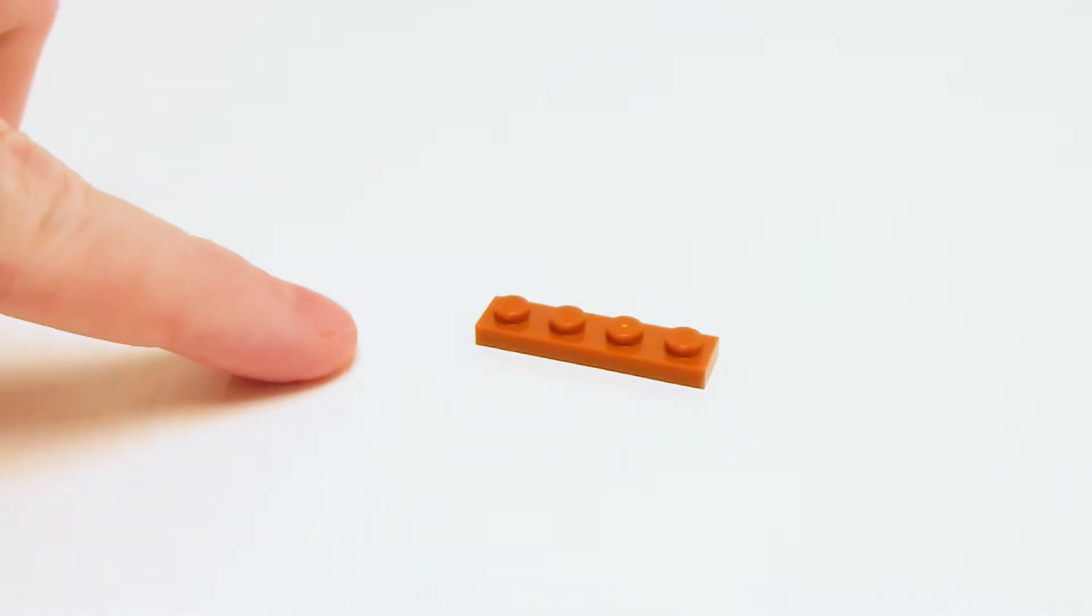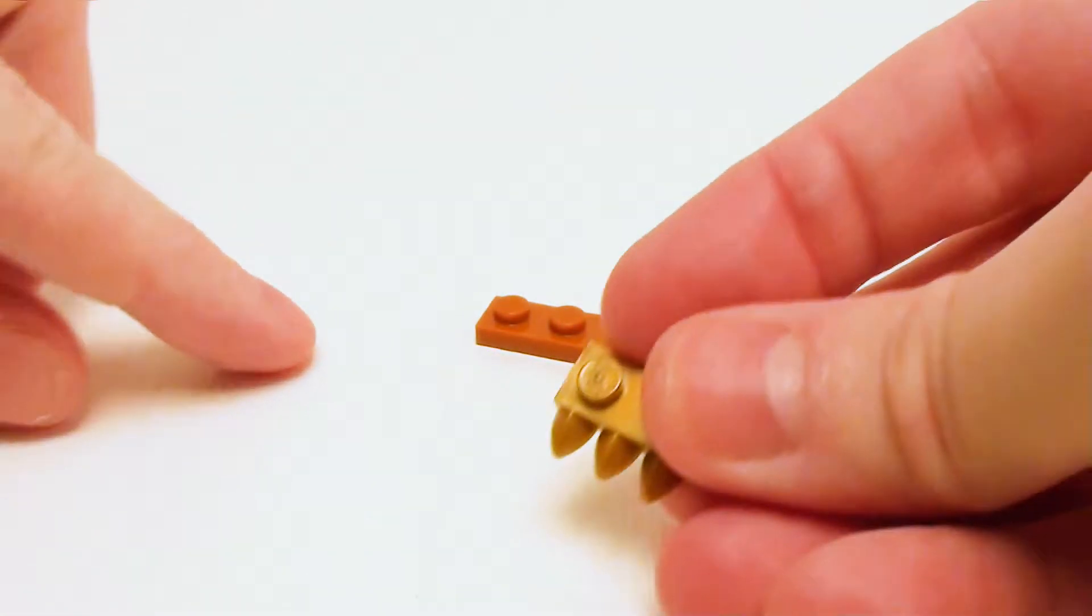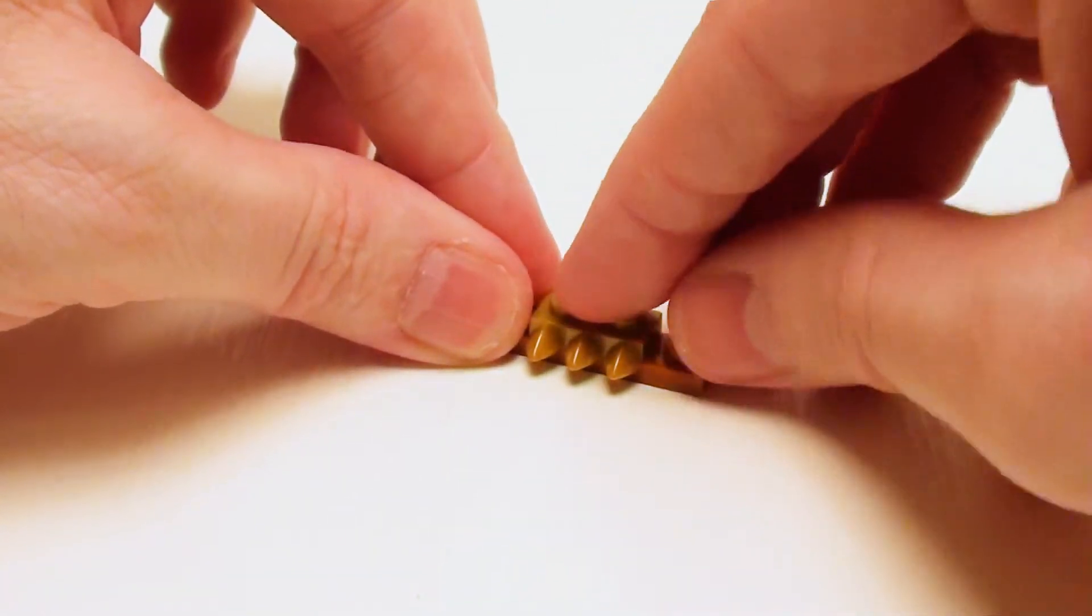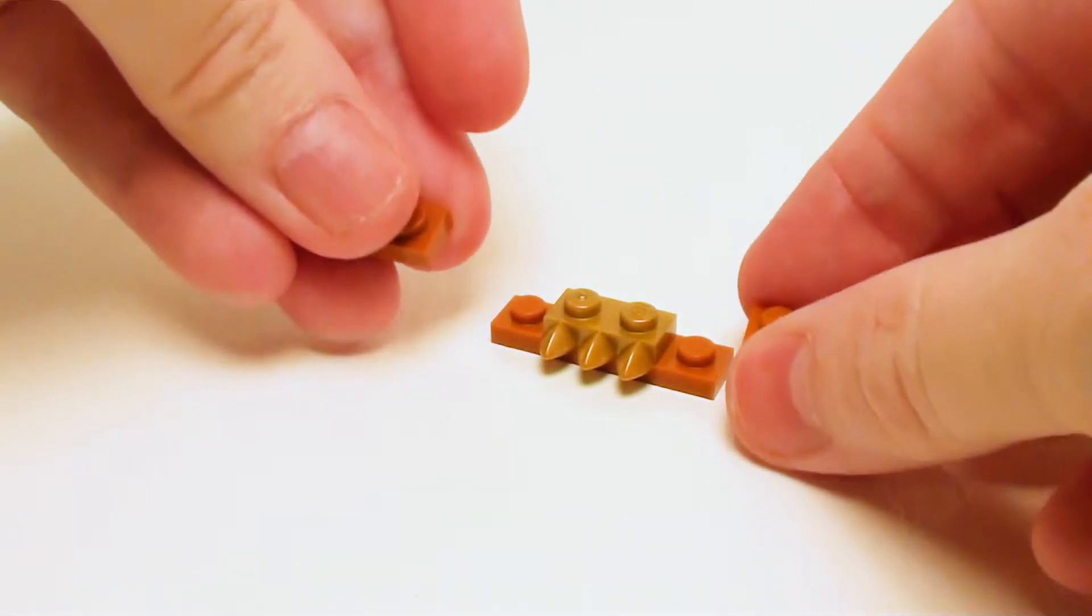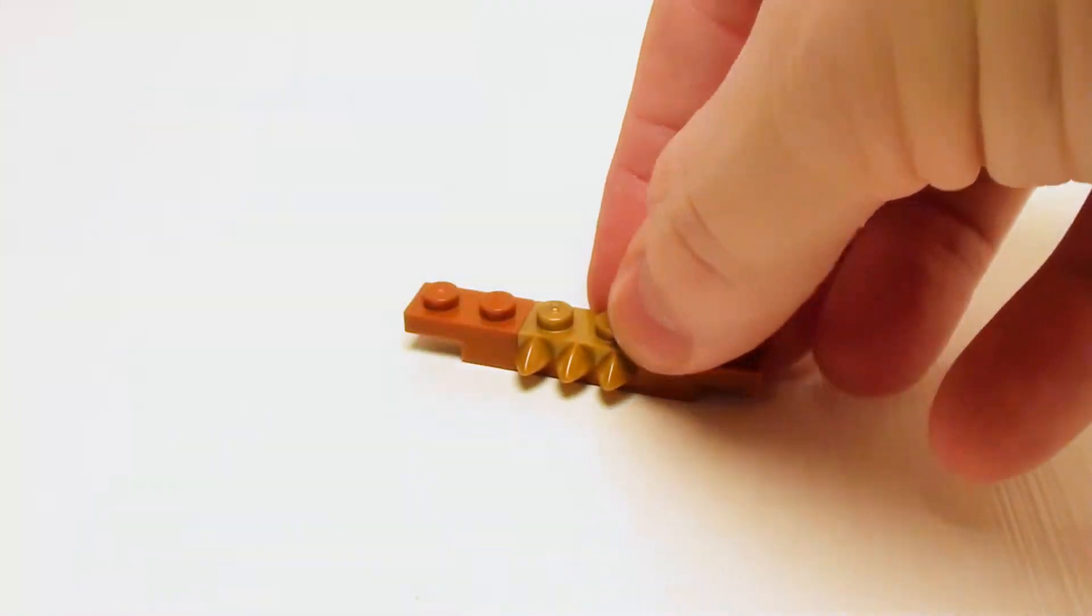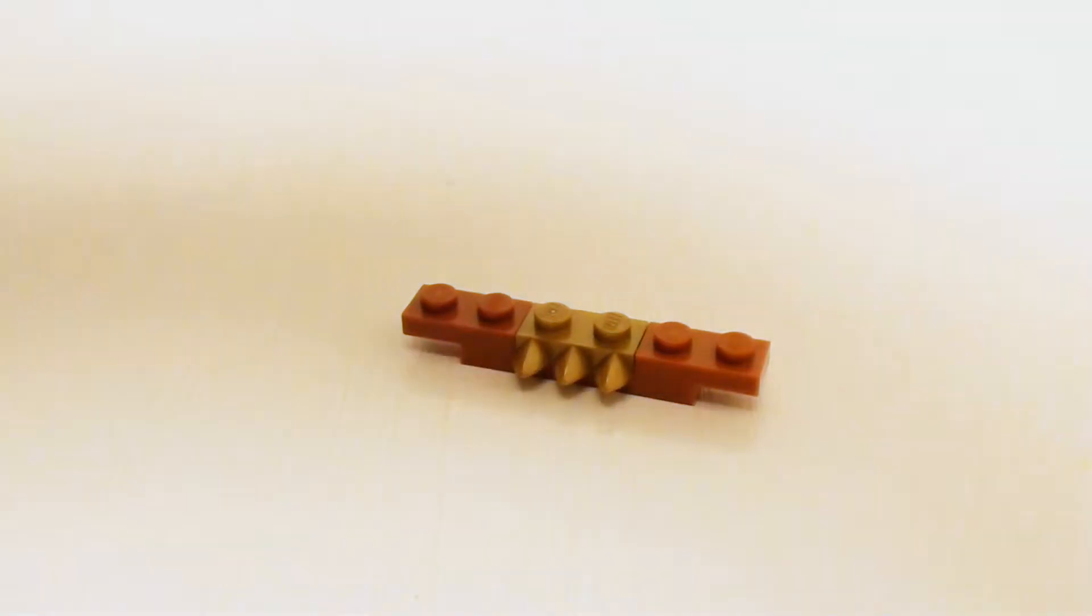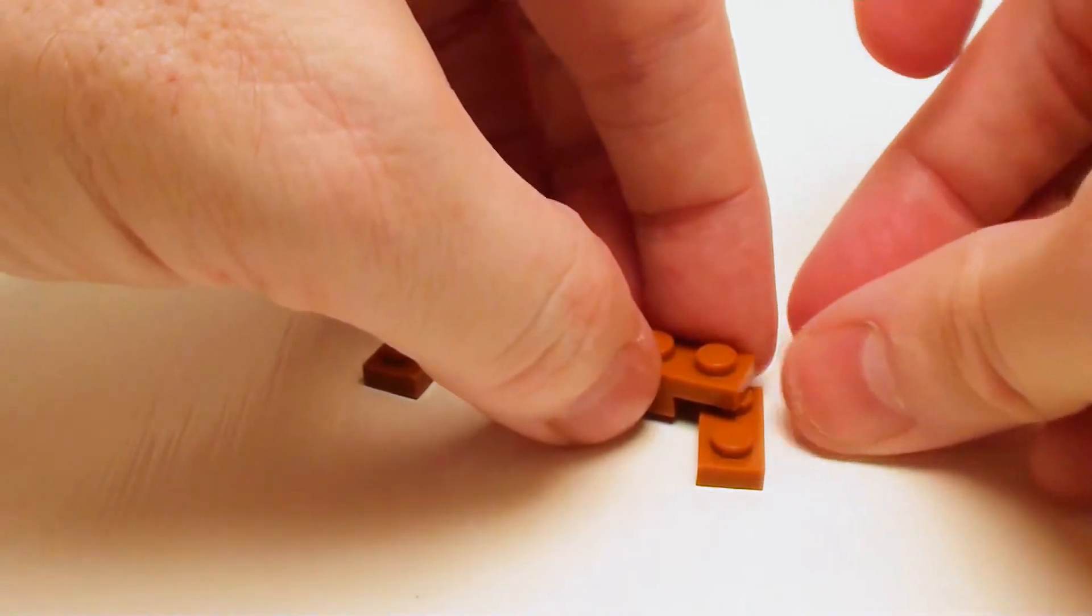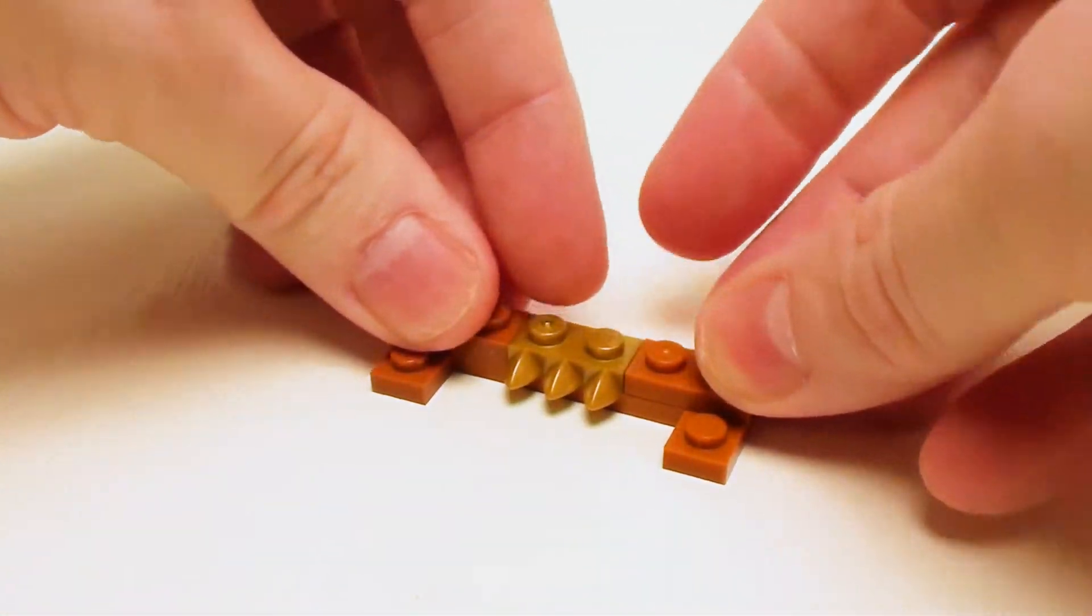Let's start with a 1 by 4 plate for the upright piano and a 1 by 2 modified plate with three teeth. Let's surround those teeth with a pair of 1 by 2 plates and on the sides two more 1 by 2 plates. These are going to help support the legs in the front.